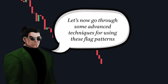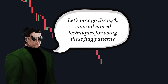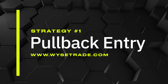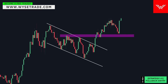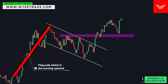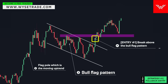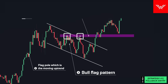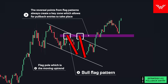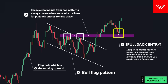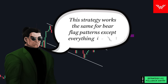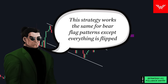Let's now go through some advanced techniques for using these flag patterns. Strategy number one: pullback entry. You have your flag pull and bull flag pattern. Entry one is here on the break. There is always a second entry point on flag pattern breaks, using the reversal points to the left as a new support level. Price pulls back with a long candle reaction, and once you have an intraday trend change, you would take a long entry. This strategy works the same for bear flag patterns, except everything is flipped.